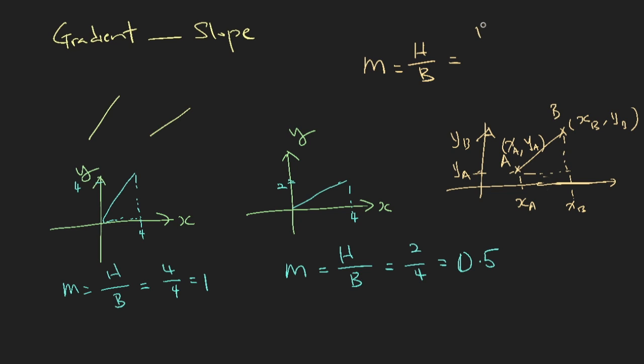The formula will always be yb minus ya over xb minus xa. So the values are the difference between the two coordinates, the two y coordinates divided by the difference between the two x coordinates. Now mathematically you can show that this is also equals to ya minus yb over xa minus xb. I'll leave it as exercise for you to prove this, but here you have the gradient. So remember this by heart, the gradient is always the value of the height divided by the value of the base.